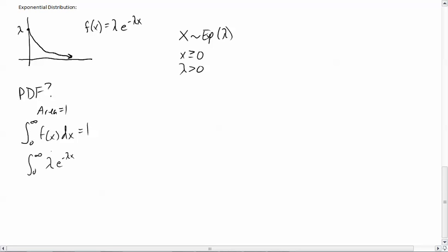So if we do that, then we end up having the integral from 0 to infinity of lambda times e to the negative lambda x. And, of course, the constant can come out just like that. So then we got lambda, integral from 0 to infinity, e to the negative lambda x dx. It needs to be equal to 1.